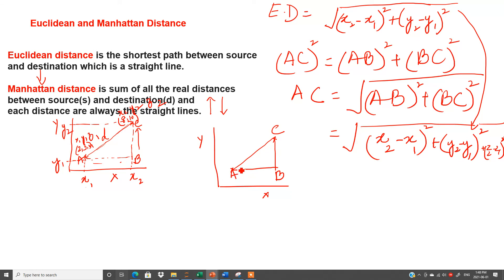Our goal is that from A to C, we have to reach from A to C. But in Manhattan distance, we cannot calculate or we cannot go directly from A to C, we have to go from A to B first and then B to C. And what is the formula? The formula is |x2 minus x1| plus |y2 minus y1|.